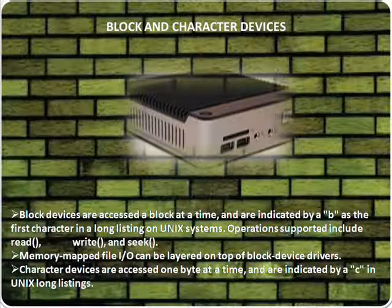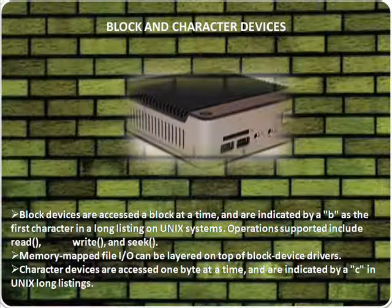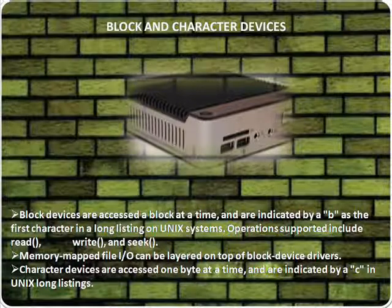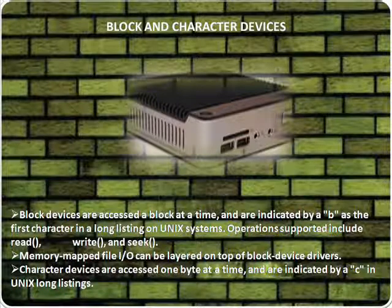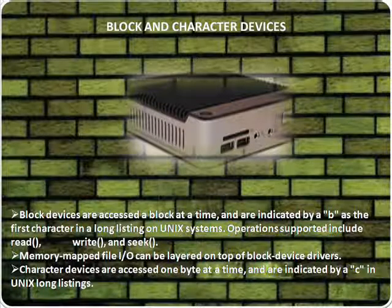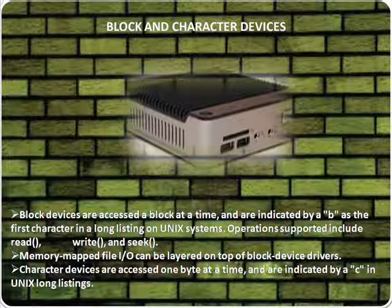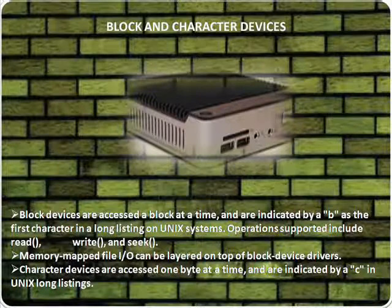Block and character devices. Block devices are accessed one block at a time and are indicated by a 'B' as the first character in a long listing on a Unix system. Operations supported include read, write, and seek functions. Memory-mapped file I/O can be layered on top of block device drivers. Character devices are accessed one byte at a time and are indicated by a 'C' in Unix long listings.